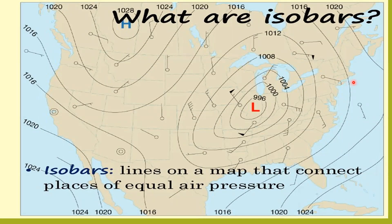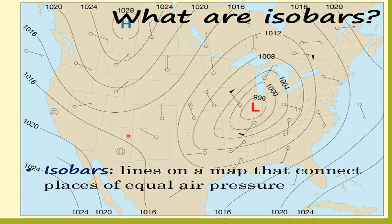Now let us look at isobars. Since 'bar' in barometer relates to pressure, isobars are lines drawn on a map connecting places of equal air pressure. Isohels are lines drawn on a map connecting places with equal sunshine, and isohyets are lines on a map connecting places of equal rainfall. So: isotherms for equal temperature, isobars for equal pressure, isohels for equal sunshine, and isohyets for equal rainfall.